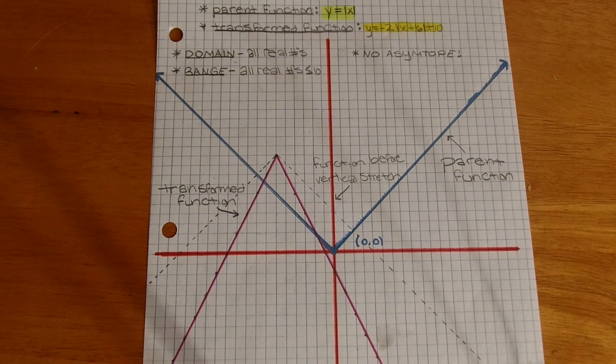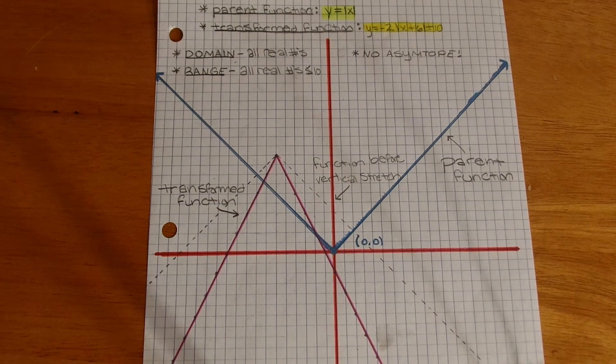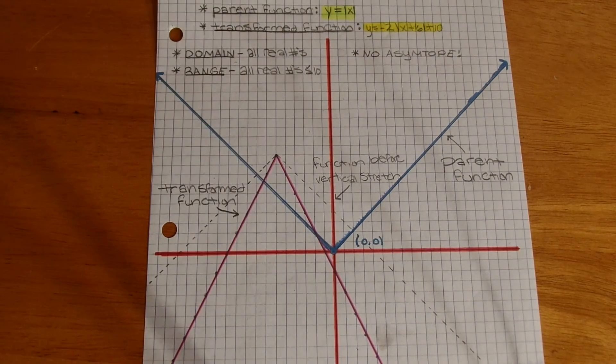The range for the function is all real numbers less than or equal to 10. And lastly, there are no asymptotes.